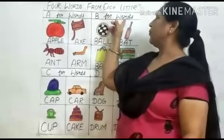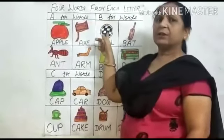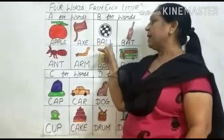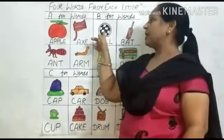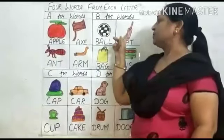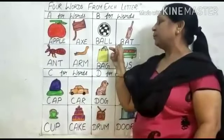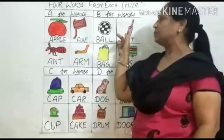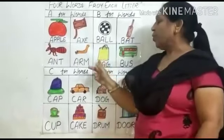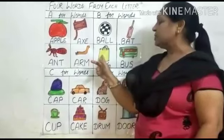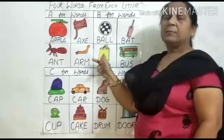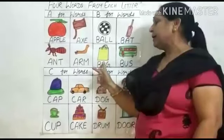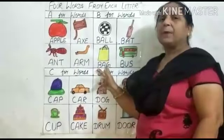B for words. What is this? This is a ball. B-A-L-L. Ball. Ball means gain. What is this? This is a bag. B-A-G. Bag. Bag means thalam.